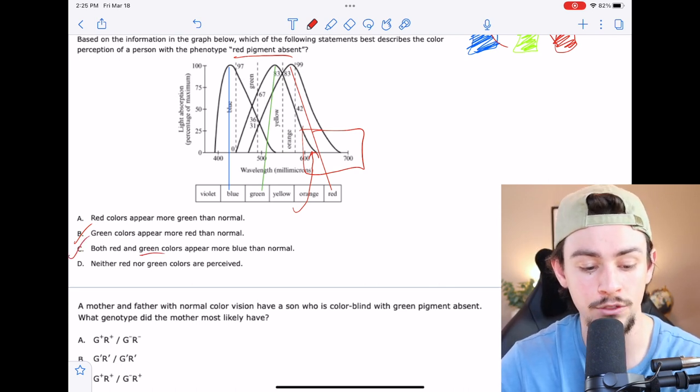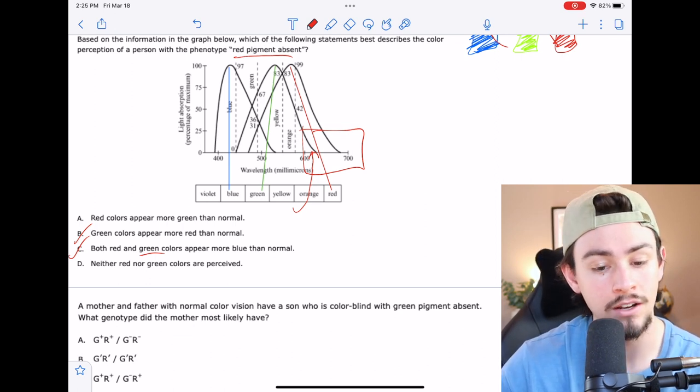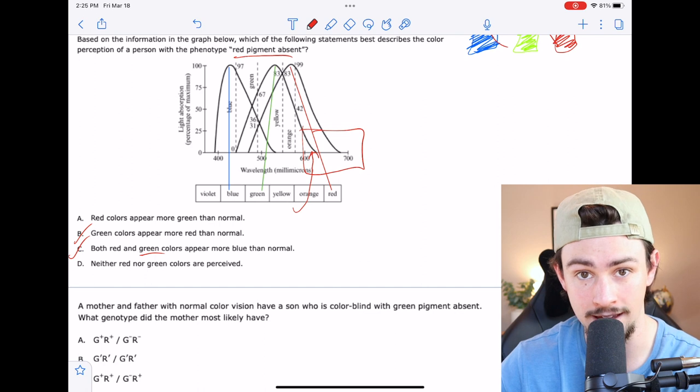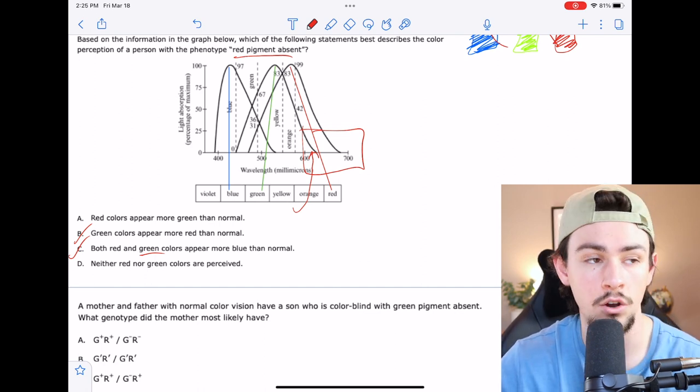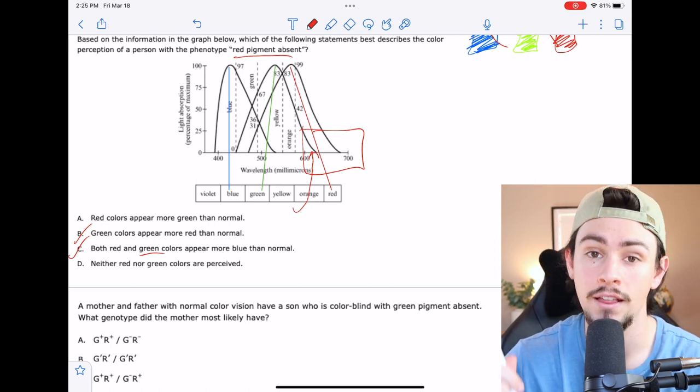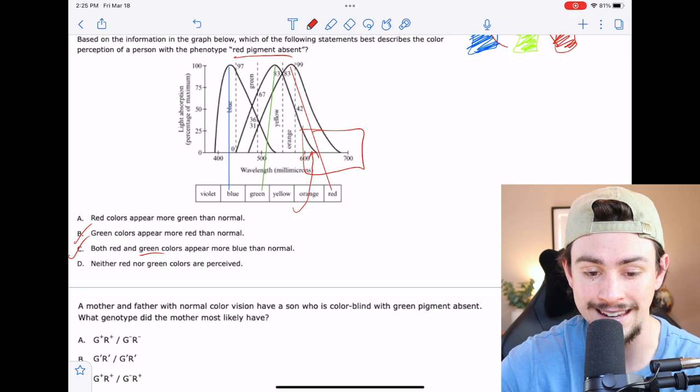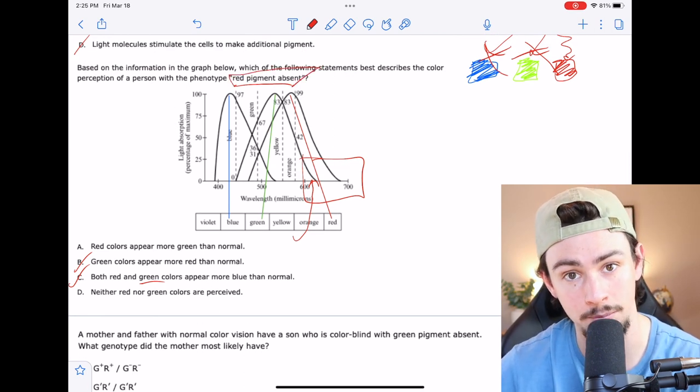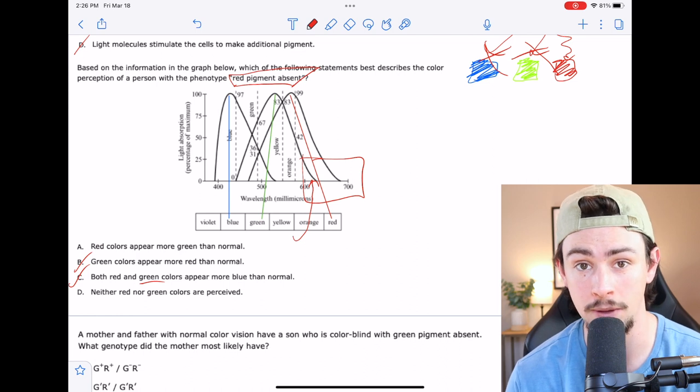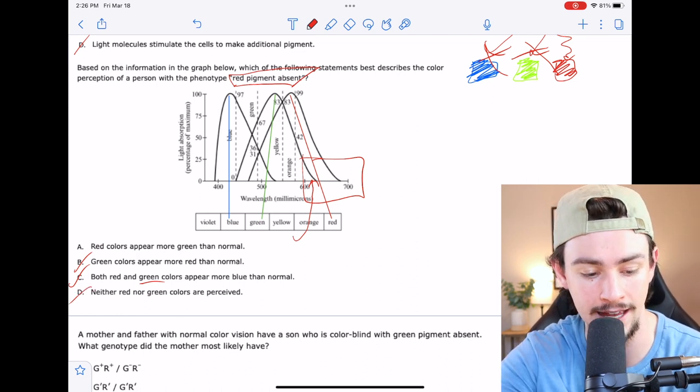D says neither red nor green colors are perceived. Again, it tells us that only red pigment is absent. Now, I know a lot of you are probably confused because you're thinking red and green are linked. They did that to throw you off their trail. It's true, they are linked. But here they're telling us specifically that red pigment is the one that's absent. So don't make any assumptions past what they're telling you. So that leads me to ruling out answer choice D, and then A would be correct.